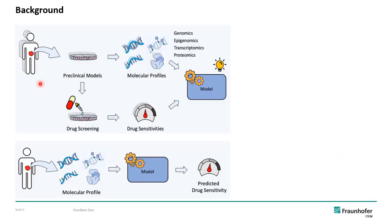The main idea is that from cancer patients we develop preclinical models — these are cancer cell lines. From these cancer cell lines we generate molecular profiles of cancer cells in the form of genomic, epigenomic, transcriptomics, and proteomics data. In parallel, drug screening experiments are also conducted to obtain drug sensitivity measurements. These two datasets are then combined into a model to get a prediction of drug sensitivity for new cancer patients or new cancer cell lines.